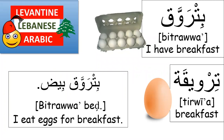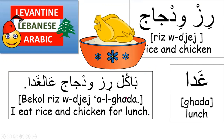Now in Lebanese, we have verbs that describe having breakfast, having lunch, and having dinner. Bitrawa means I have breakfast. Bitrawa bayd means I eat eggs for breakfast. Similarly, we have verbs for ghada and asha, which we'll see in a bit.